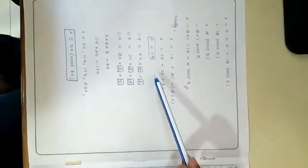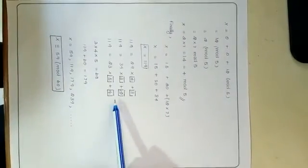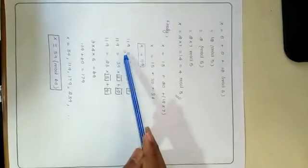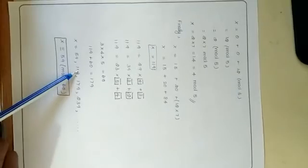We add all three x values: 15 + 20 + 84 (which is 12 × 7) = 119. We then take the product of the three mod values: 4 × 3 × 5 = 60. Adding 60 repeatedly gives 179, 239, etc. Subtracting 60 from 119 gives 59, which is the least positive value. So the final answer is x ≡ 59 mod 60.